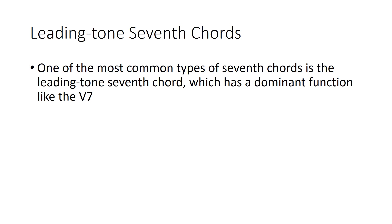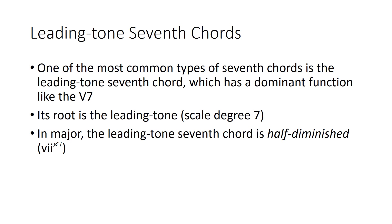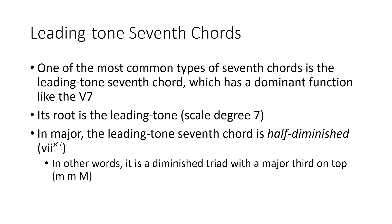And then it adds La to that. So the root is the leading tone — Ti. In a major key, that becomes half-diminished. It's a half-diminished 7th in major keys because it has a diminished triad with a major 3rd on top. That's what makes it half-diminished.